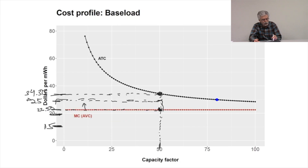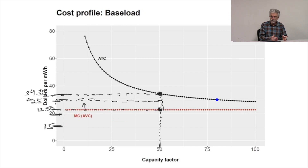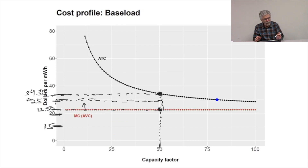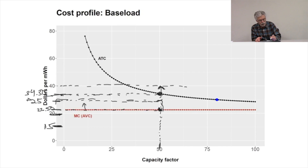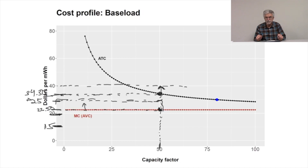At a price of $34.30, we're actually paying all of our variable costs and all the fixed costs. So we're making what economists call zero economic profit — this is paying all of our costs plus a fair rate of return on the capital invested. Any offer over $34.30, say an offer of $40, means we're actually making more than our average total cost, and we'd be making what I'll later call scarcity rents on this 50% capacity factor contract.